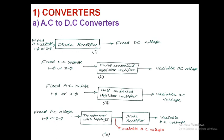The second one: for the same fixed AC voltage input, either single phase or three phase, by using a fully controlled thyristor rectifier we can get variable DC voltage. As controlled switches are present, by controlling those switches in the fully controlled thyristor rectifier, we can get variable DC voltage.